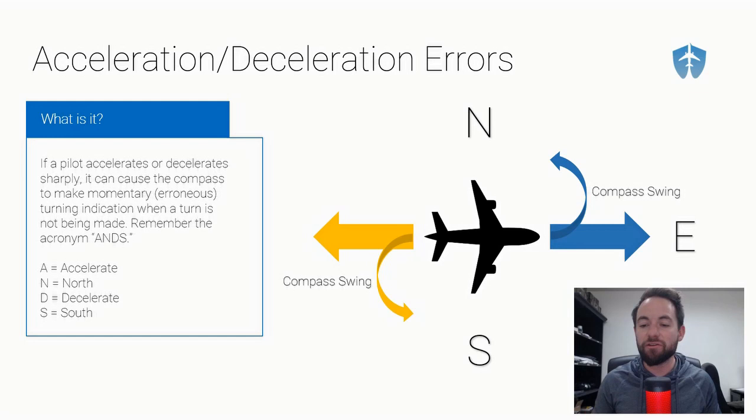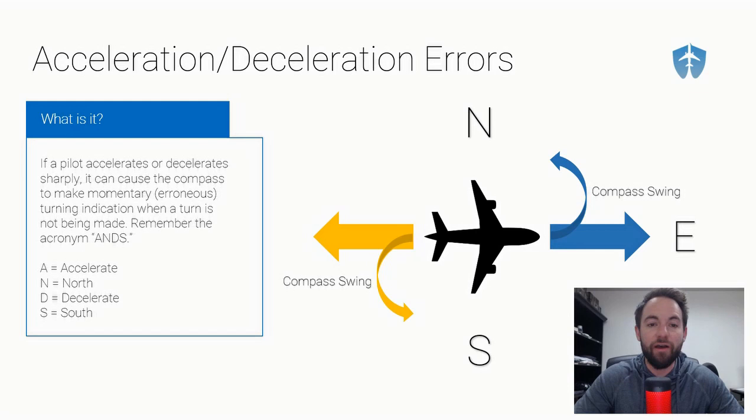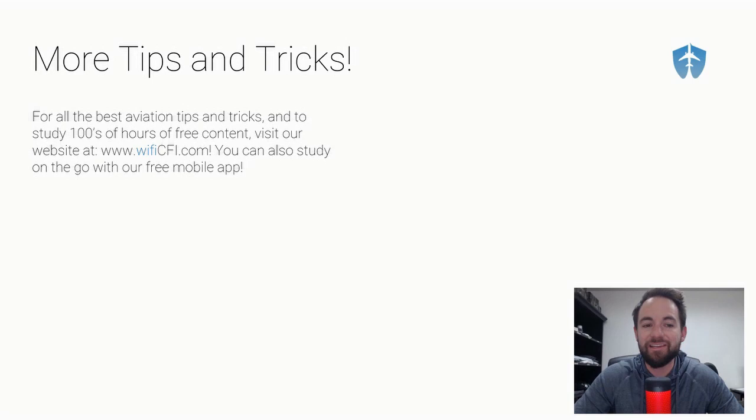Acceleration and deceleration errors are most prominent when aircraft are flying on east and west headings, and not so prominent on north and south headings. For the full explanation of why, check out the complete magnetic compass lesson on Wi-Fi CFI. But the basics are: accelerate north, decelerate south — if accelerating you could see a turn to the north, if decelerating you could see a momentary turn toward the south on your compass.